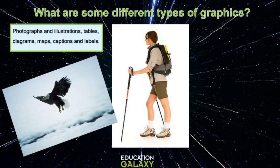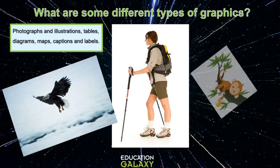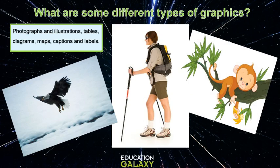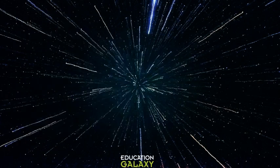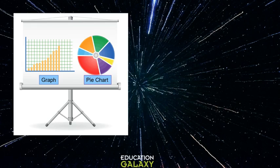Here you see a couple of photographs. A photograph shows what something looks like and it is taken with a camera. Here is an illustration which shows what something looks like as drawn by hand. We have a graph and a pie chart here. Graphs and charts organize and help compare information in a visual way.